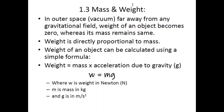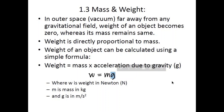Weight is directly proportional to the force of gravity — the greater the gravitational pull, the greater the weight. Mass is also directly proportional to weight — the more mass an object has, the more gravitational force is applied to it and hence the greater its weight. To calculate weight, use the formula W = mg, where m is the mass in kilograms and g is the acceleration due to gravity in metres per second squared.